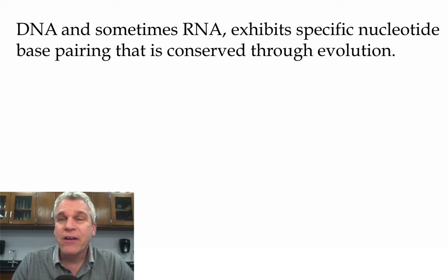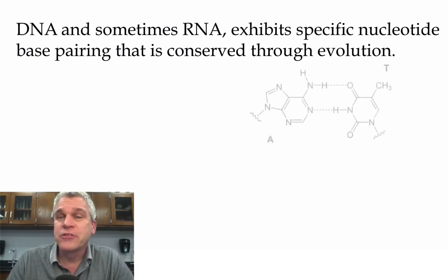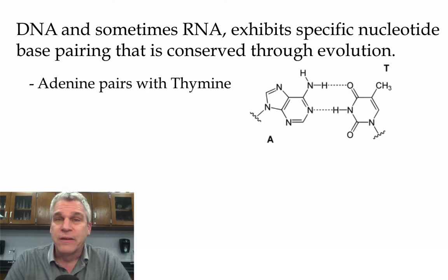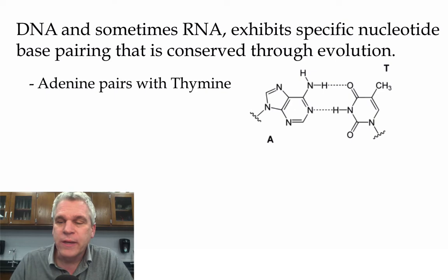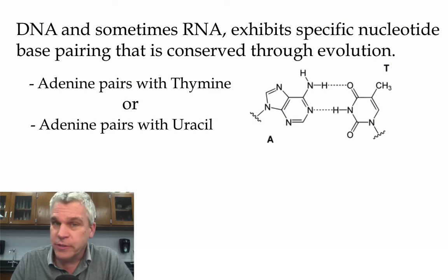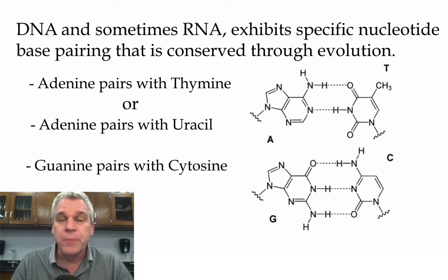DNA and RNA does exhibit some nucleotide-based pairings. And we found that this has been conserved all throughout evolution. So for instance, no matter what organism you're talking about, adenine always pairs with thymine, or sometimes adenine pairs with uracil if we're talking about RNA, whereas guanine always pairs with cytosine.